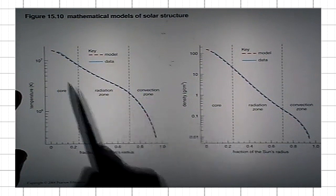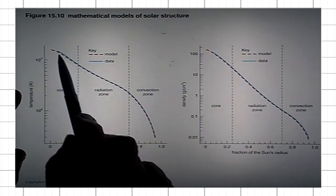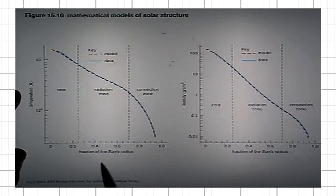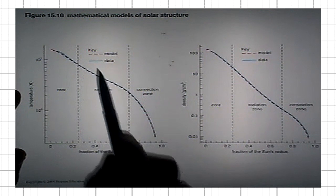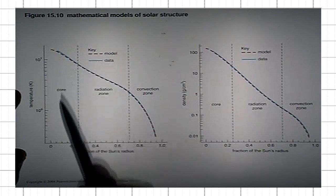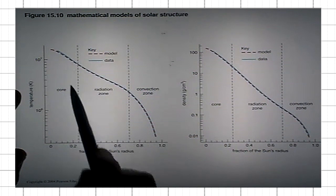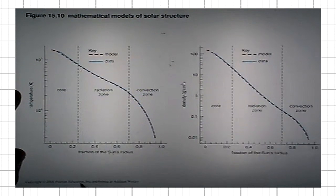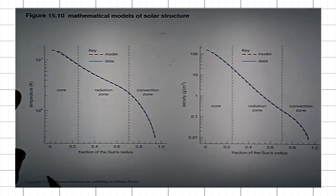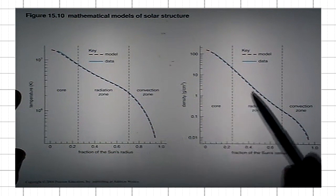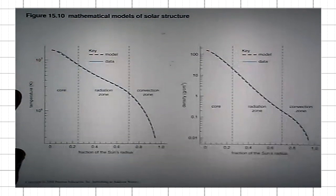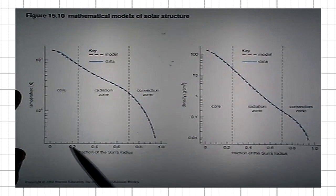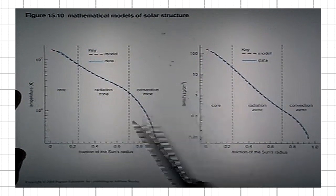and the blue line are actual data obtained by helioseismology. The dashed red line are the results of the calculation obtained using the standard solar model. You can see that the two are in perfect agreement, both for temperature and density.